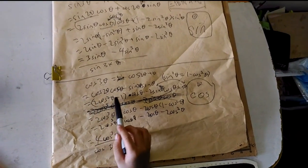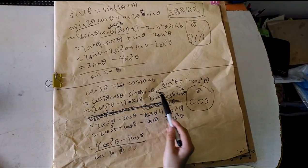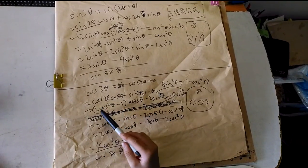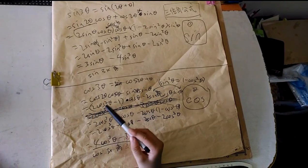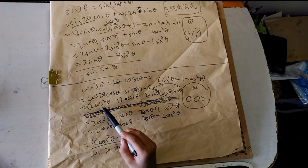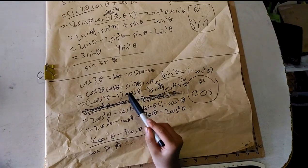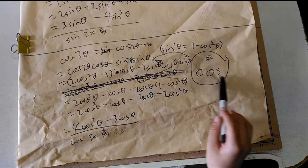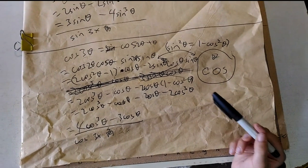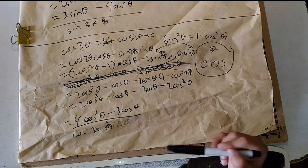So right here, cosine of 2θ, you can write that as 2 cosine squared θ minus 1 times cosine θ. And right here, sine of 2θ is 2 sine times cosine.